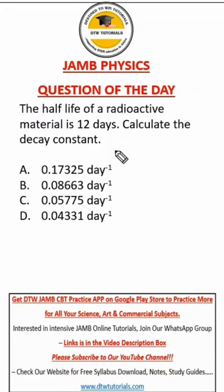Now let's look at this JAMB physics question. It says the half-life of a radioactive material is 12 days. Calculate the decay constant.